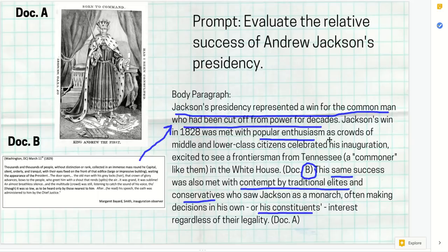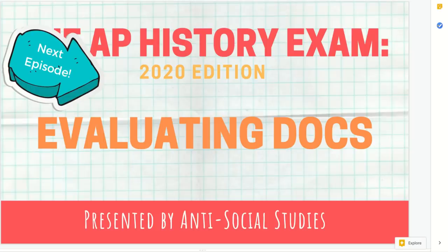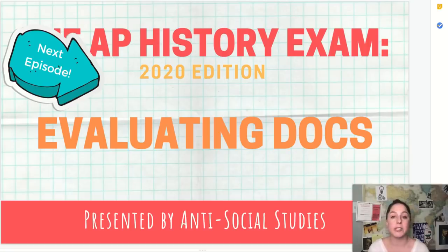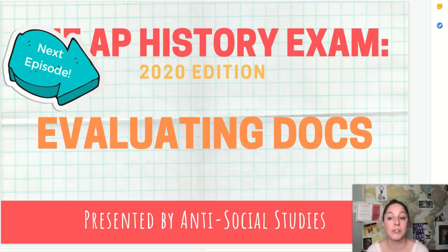This argument isn't complex on its own, but when you group documents together and start making connections — showing two sides of the same coin, or how one document refutes another — that's what they really mean by complexity, and that's what they're looking for in the higher-level points. Next episode, we'll talk about how to evaluate those documents: discussing historical context, intended audience, purpose, or point of view, and connecting it back to your argument.